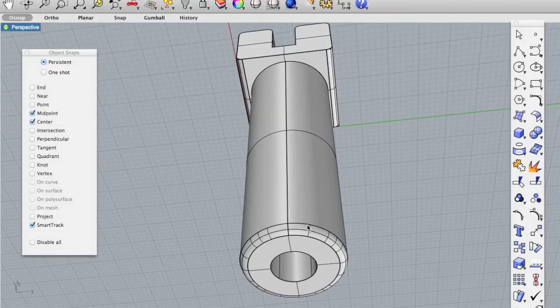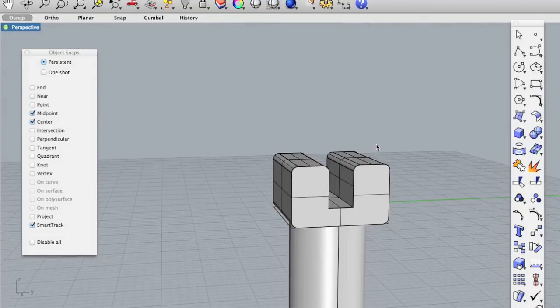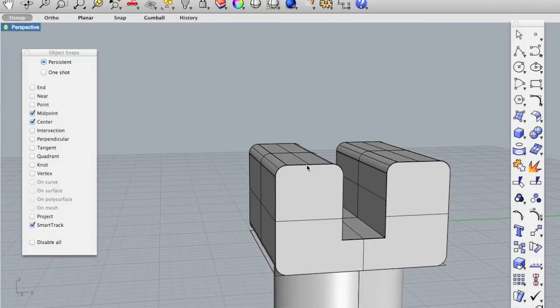And then lastly, you'll notice these filleted edges around the bottom. That just gives it a nice look. And also did a fillet around here, here on both sides.